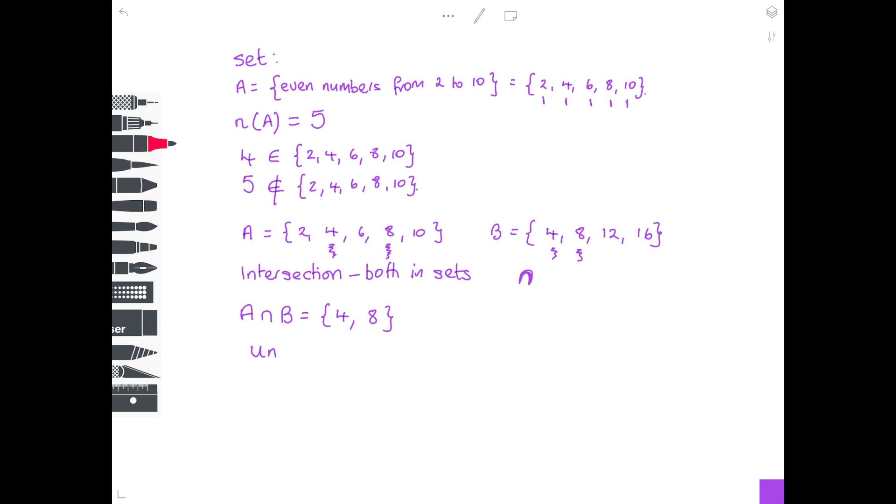The other notation is you need all the numbers which are everything in A and everything in B. This is called the union. So this is everything in A and everything in B, but you don't list any number twice. The notation for this is a U for union, so it's quite easy to remember which is which. So A ∪ B is everything in set A: {2, 4, 6, 8, 10}, and also everything in set B. Except when I start listing B, I have already listed 4 and 8, so I've only got 12 and 16 to list.